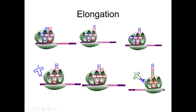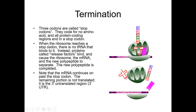Here you can see the messenger RNA, the P site, and the E site. The first transfer RNA will be moved here, then it will move on to the P site, and once this is repeated the process continues.